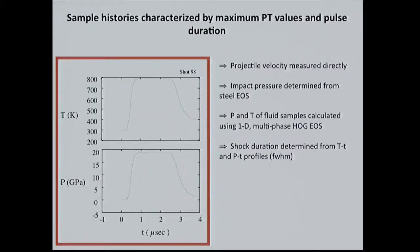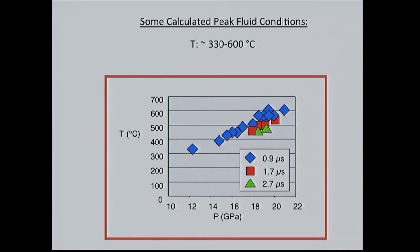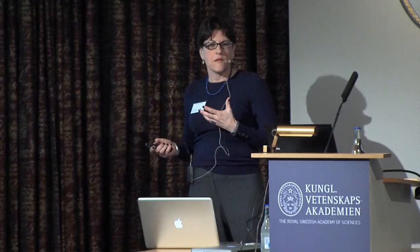After an experiment, we measure velocity directly and characterize the shock histories using three parameters: maximum pressure, temperature, and pulse duration — all calculated. Impact pressure is determined from the steel equation of state; pressure and temperature of the fluid samples are calculated using a one-dimensional equation of state; and shock pulse duration is determined from the full width at half maximum of the history curves. Temperature ranges we calculate are between 300 and 600 degrees C, with pressures between 12 and 22 GPa.